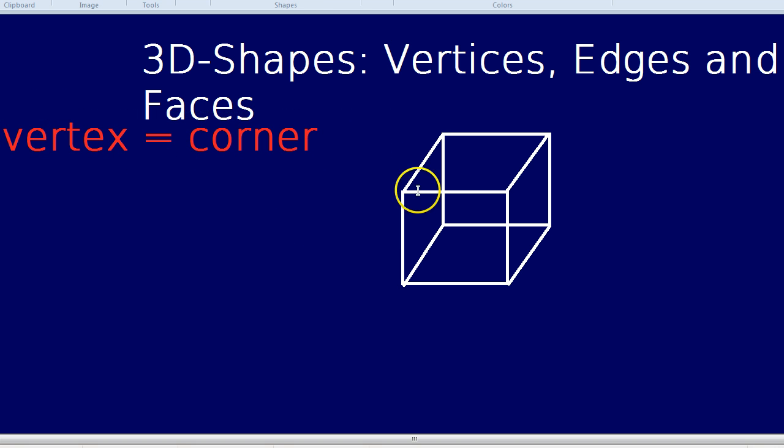How many corners does a cube have? I can see 1, 2, 3, 4, 5, 6, 7, 8. So it has 8 vertices.